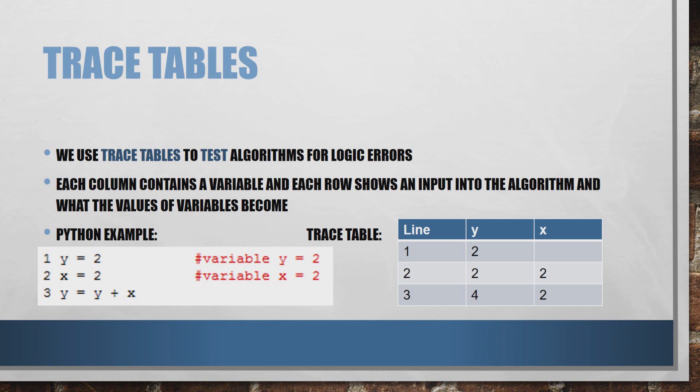If we run that for our trace table, we've got the line numbers listed down the left-hand side, then the values of the y and x variables. At line 1, if we compare that to line 1 of the Python example, we know we're setting y to equal 2. So on line 1 of our trace table, the value of y is 2 and x doesn't yet have a value.